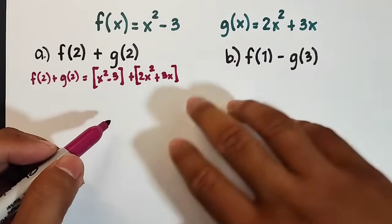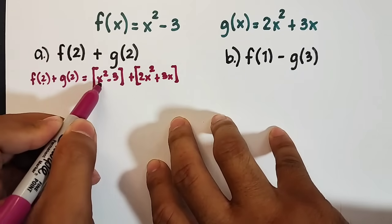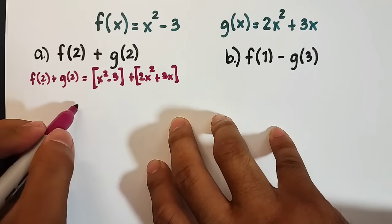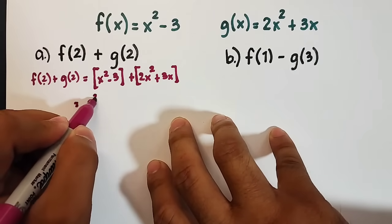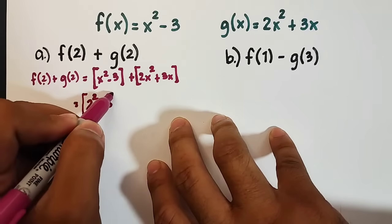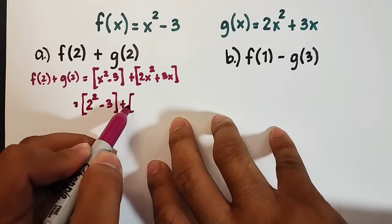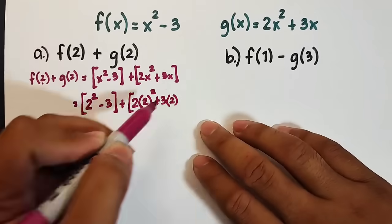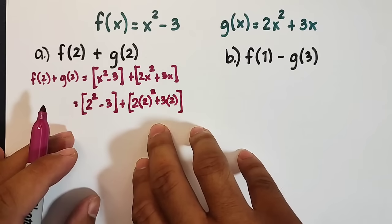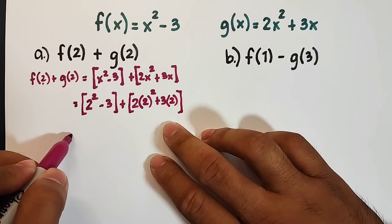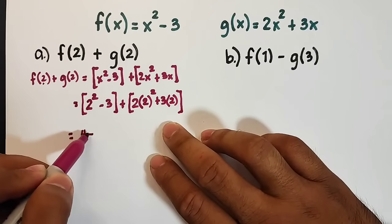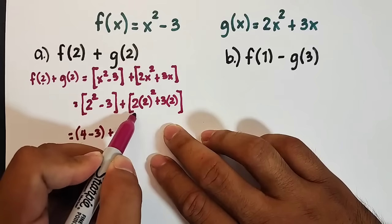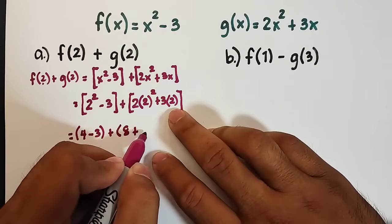Now what you need to do here is, since we have f(2), you will plug in 2 in the variable x here, and since this one is g(2), you will plug in 2 in the x variable here. So what will happen? It will become 2² - 3 + 2(2²) + 3(2). What we have done here is simply substituting the value of x to the variable.